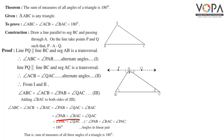Here, angle PAB and angle BAC together form angle PAC, so we can write angle PAC plus angle QAC. Now angle PAC plus angle QAC equals 180 degrees because they are angles in a linear pair. Hence we prove that the sum of the measures of all three angles of a triangle is 180 degrees.